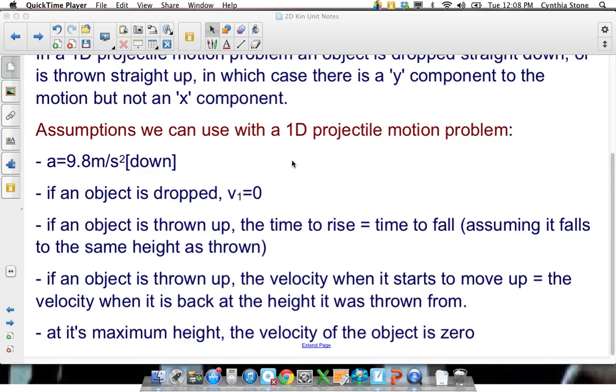So the assumptions that you can make with 1D projectile motion: one is that the acceleration is 9.8 meters per second squared down, and the 9.8, remember, like it's down is the direction. So as with anything we do in kinematics, you define a positive direction, and the 9.8 could end up being negative or positive, depending on that.